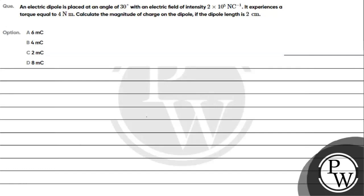Let's read the given question. An electric dipole is placed at an angle of 30 degrees with an electric field intensity of 2×10⁵ Newton per Coulomb. It experiences a torque equal to 4 Newton meter. Calculate the magnitude of charge on the dipole if the dipole length is 2 centimeter. Option A is 6 millicoulomb, option B is 4 millicoulomb, option C is 2 millicoulomb, option D is 8 millicoulomb.